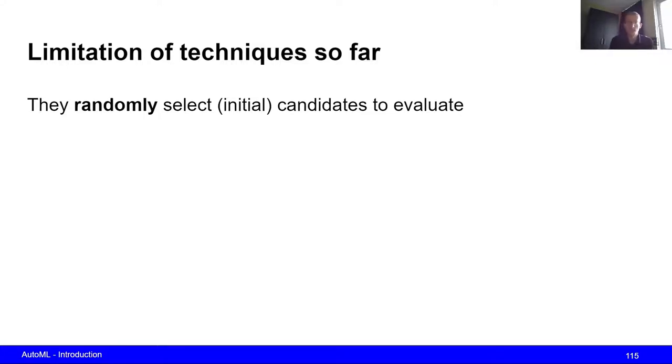Hi. Now the techniques that we have seen in the previous videos, namely grid search, random search, as well as their extensions like successive halving and hyperband, they are limited in some sense. And that is that they randomly select the initial candidates that they are going to evaluate. So they randomly select hyperparameter configurations that they are going to try out.